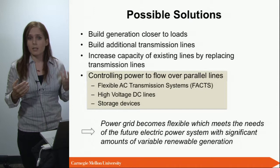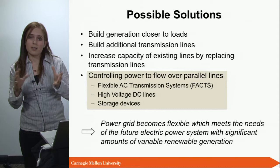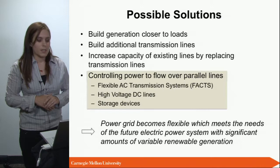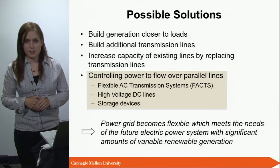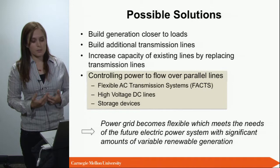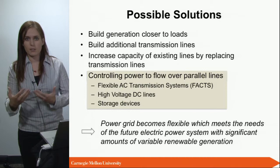Imagine at some point in time you have a lot of wind generation on one side of the system causing congestion — you can push power to the rest of the system. If the congestion shifts to the other side, you can push power the other way. Of course, how much you can influence power flow is always limited. One disadvantage of these devices is that they're still quite expensive. However, my group works on the algorithms for controlling these elements — we're not focused on cost-effective hardware development, as other people are working on that.